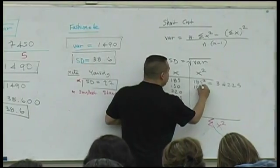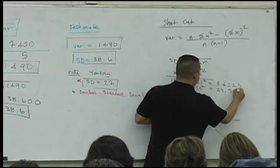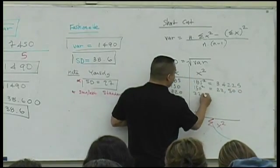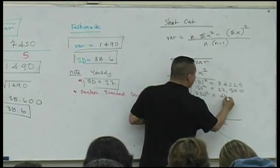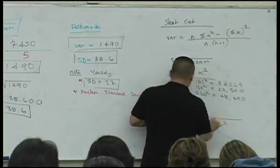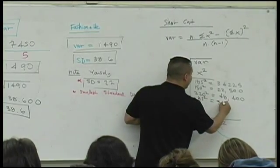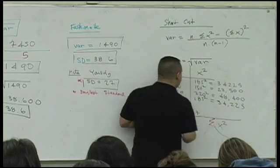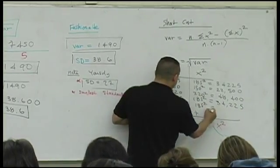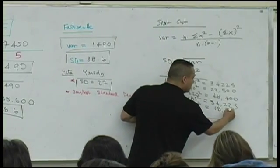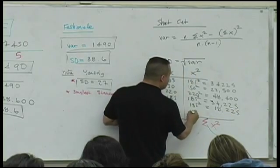Let's square the other values. What's 150 squared? 22,500. What's 220 squared? 48,400. 185 squared, we already have that, 34,225. 135 squared? 18,225.